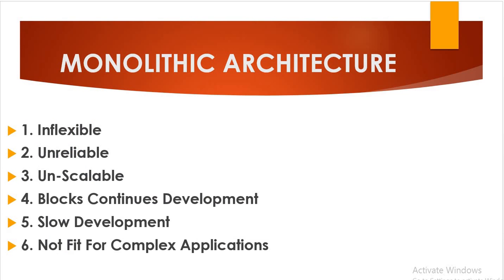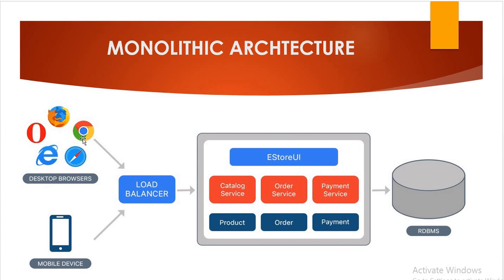The second challenge is that monolithic architecture is unreliable. Even if one feature of the system does not work, the entire system goes down. For example, in a store application, if our order service is not working, the entire server will go down and nothing will work.